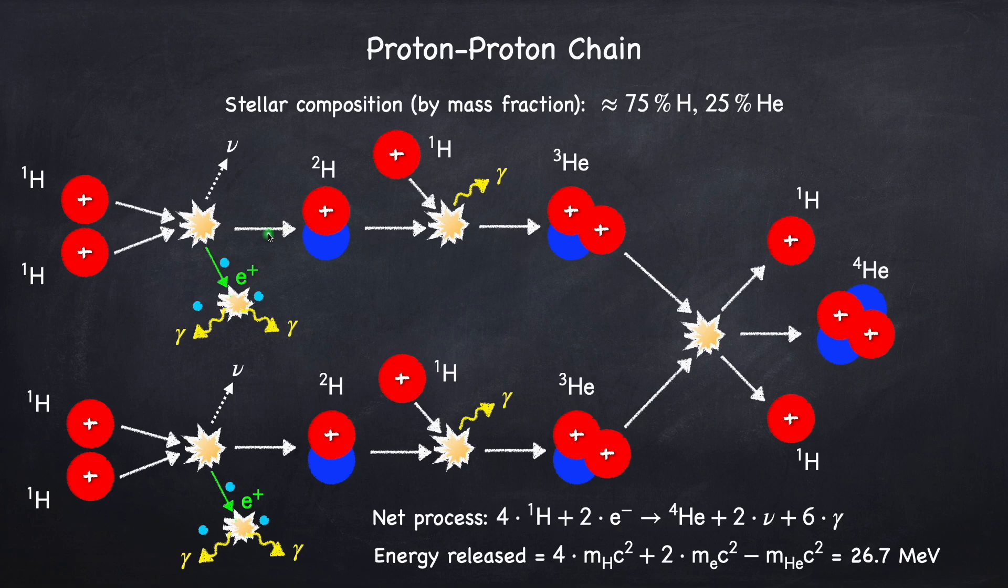So in this process, a positron is emitted, which converts one of the protons into a neutron. This positron will immediately bump into an electron and annihilate into two photons.